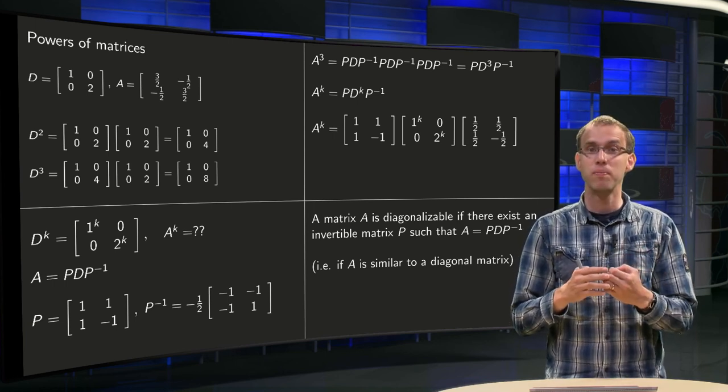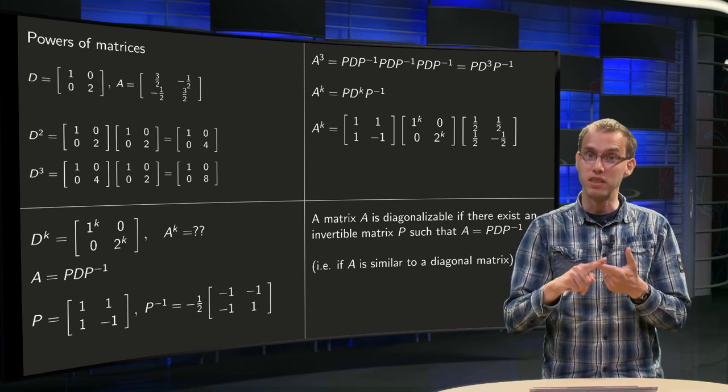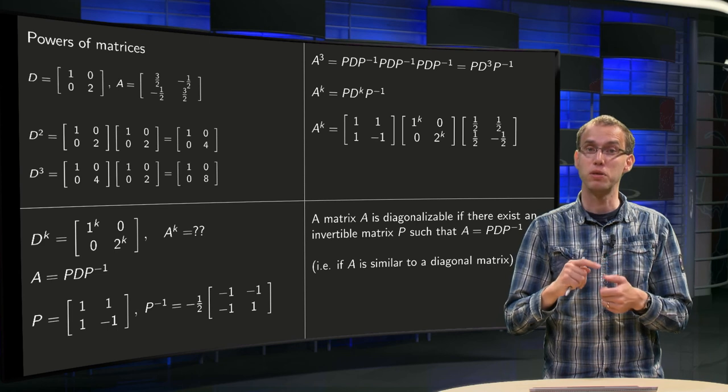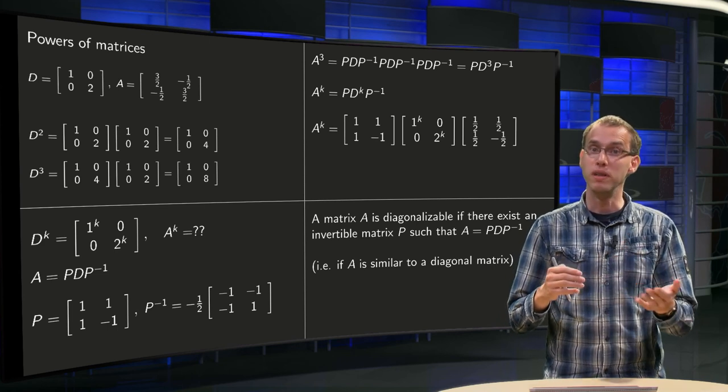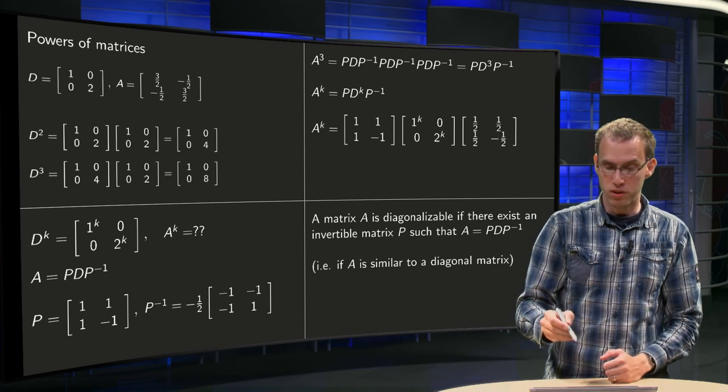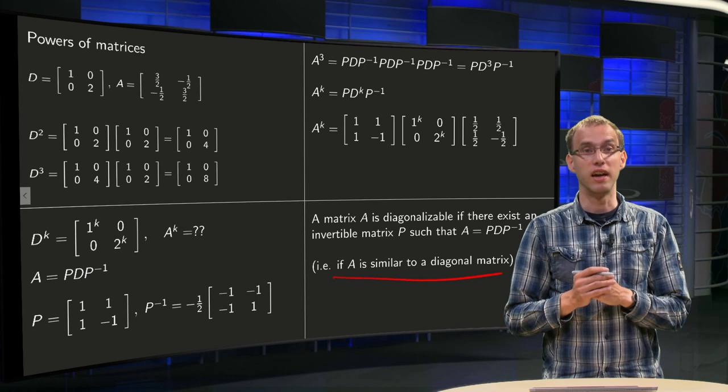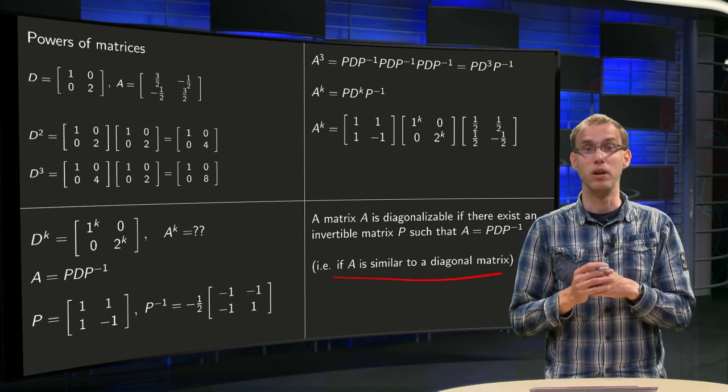A diagonalization of A is finding a matrix P and a matrix D, an invertible matrix P such that A equals P times D times P inverse, or if you use the word similar, A is diagonalizable if A is similar to a diagonal matrix.